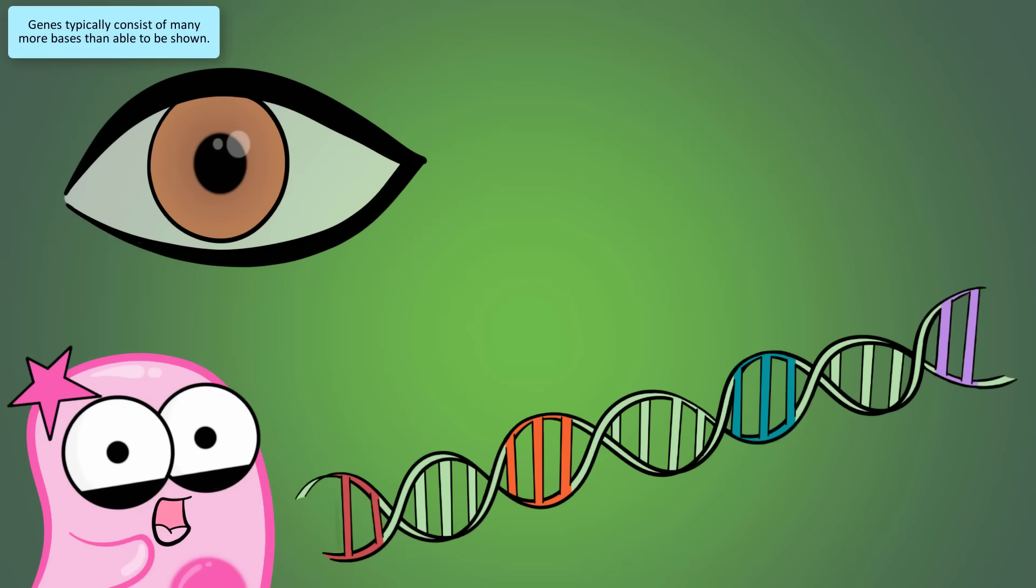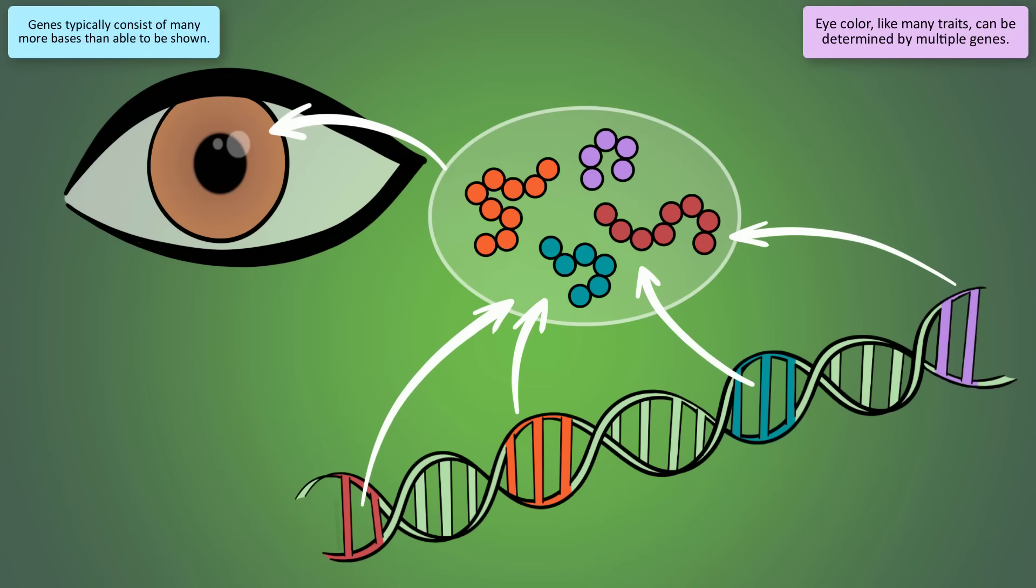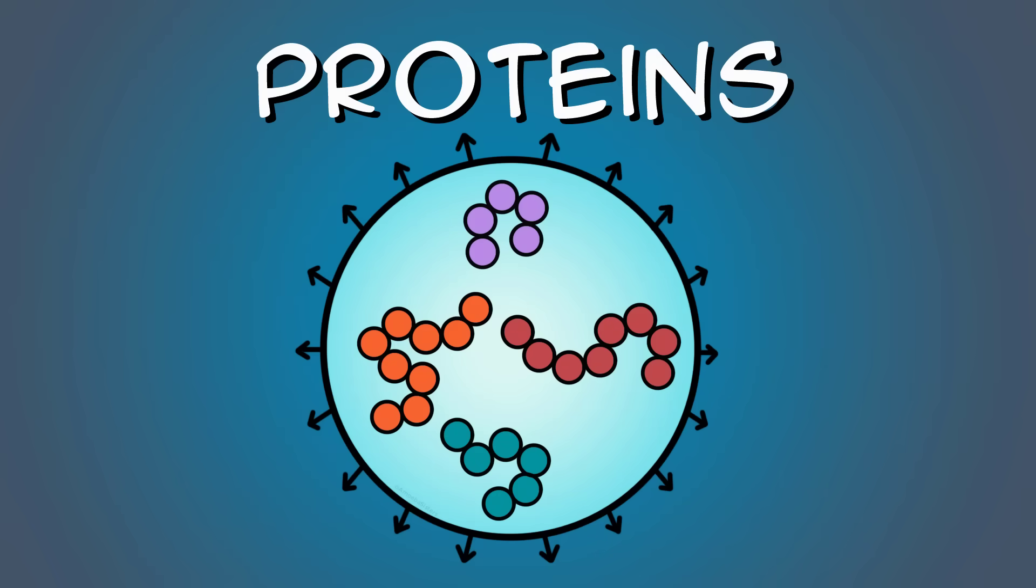For example, let's consider your own eye color. Human eye color is actually pretty complex. It's determined by many genes. The genes can code for proteins involved in producing the eye color pigment. But proteins coded for by genes, they can play a wide variety of roles besides just your eye color.